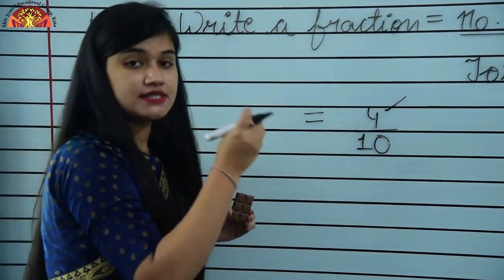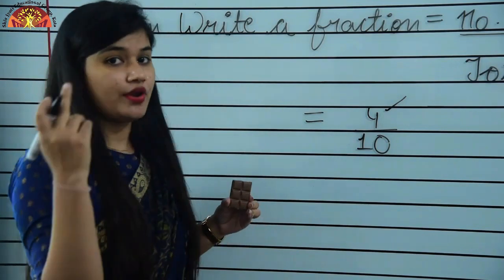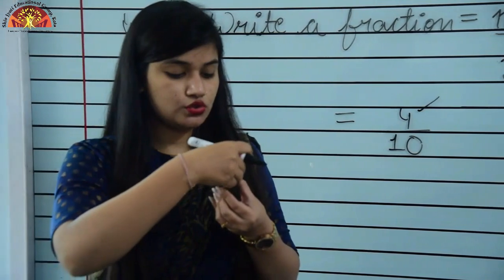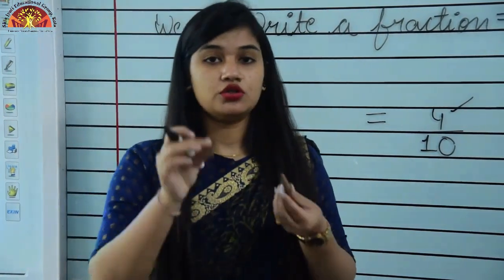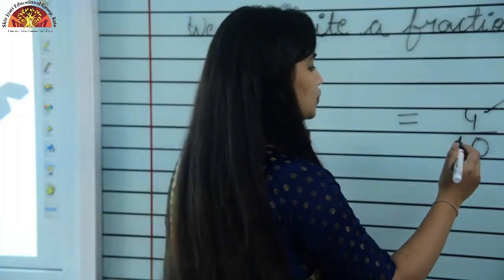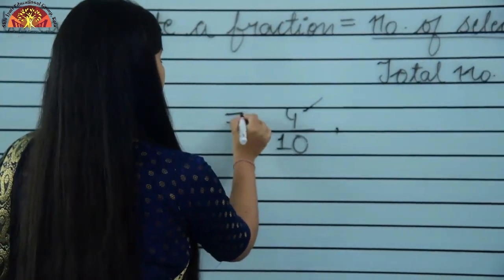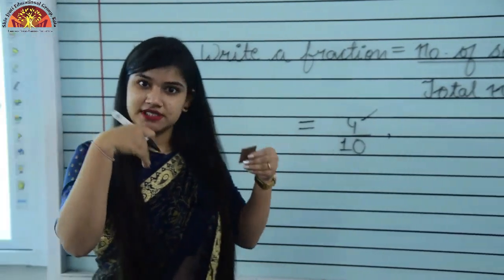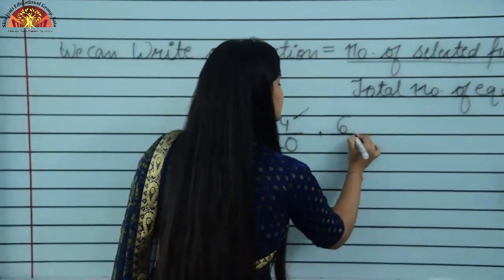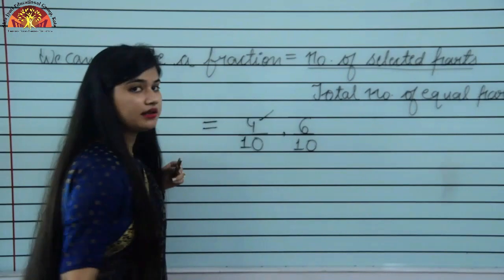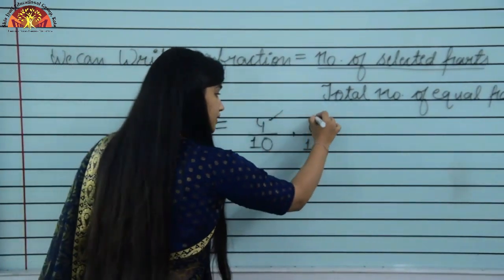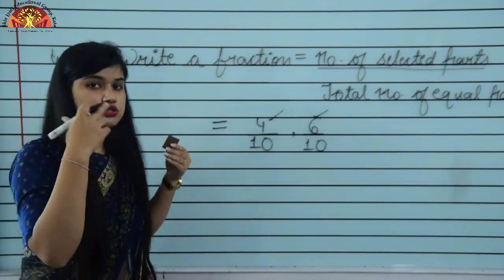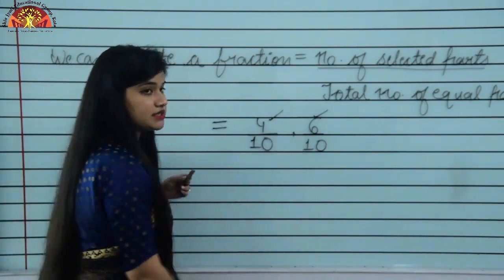The fraction of chocolate pieces eaten by me is 4 upon 10. Now I am going to take 2 more pieces. So now the fraction will be 6 upon 10. If the question is: what is the fraction of pieces of chocolate eaten by me? The fraction will be 6 upon 10.